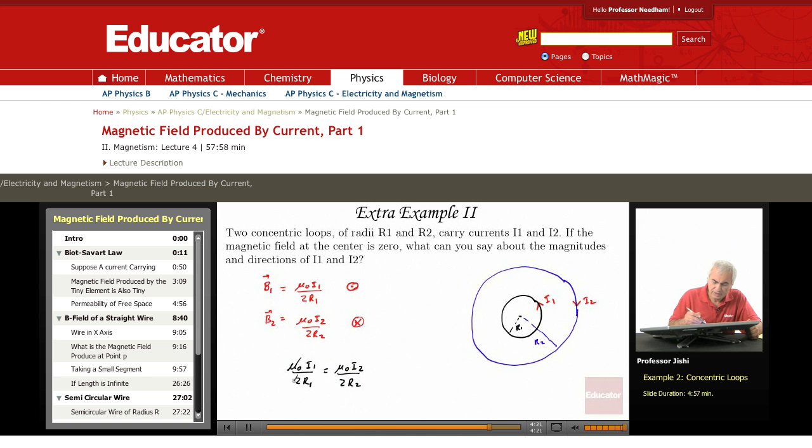So mu0 over 2 cancels. This means that I2 over R2 is I1 over R1. So I2 is I1 R2 over R1. So this is the connection between them.